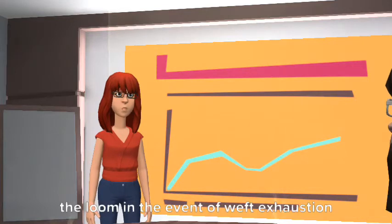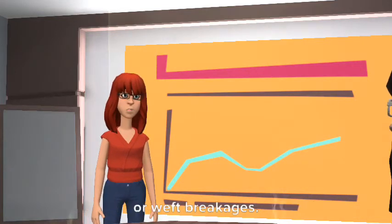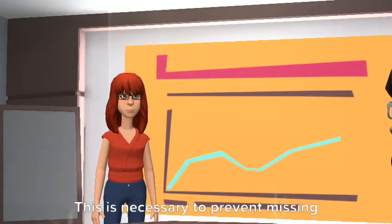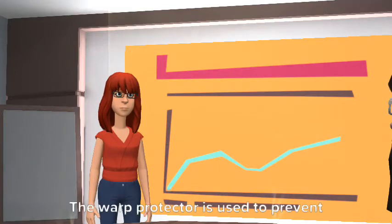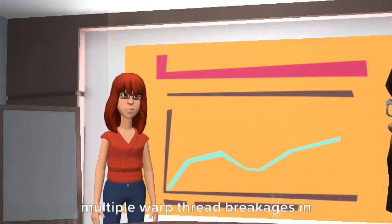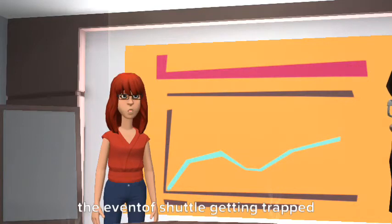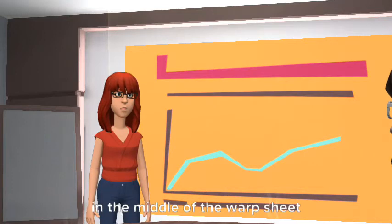The weft stop motion is used to stop the loom in the event of weft exhaustion or weft breakages. This is necessary to prevent missing weft threads called cracks in the fabric. The warp protector is used to prevent multiple warp thread breakages in the event of shuttle getting trapped in the middle of the warp sheet.